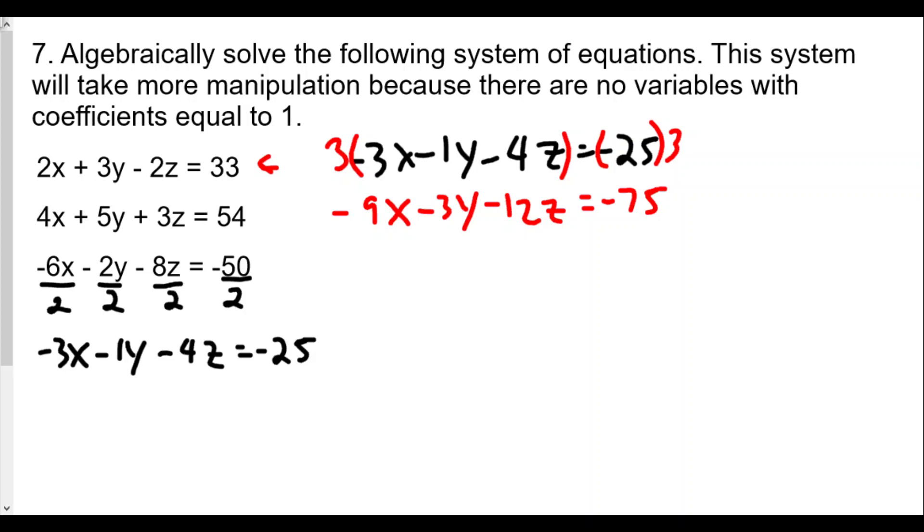We combine this with the first equation of 2x plus 3y minus 2z equals 33 and add downwards. We'll get negative 7x. The y's cancel out because negative 3y plus positive 3y cancels to 0. And negative 12z minus 2z will give us negative 14z. And negative 75 plus 33 should give us negative 42. So now we have our first equation.